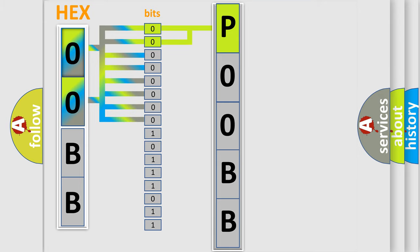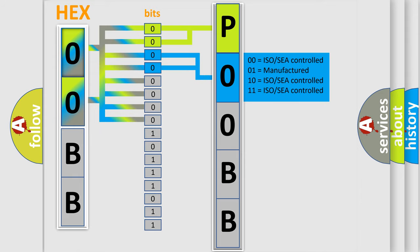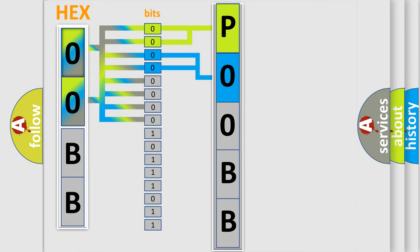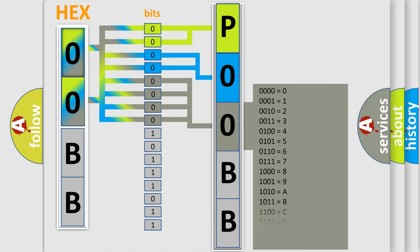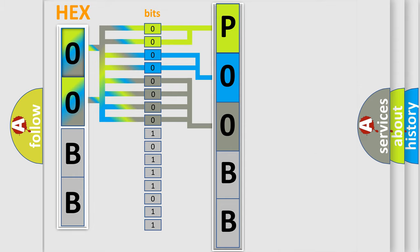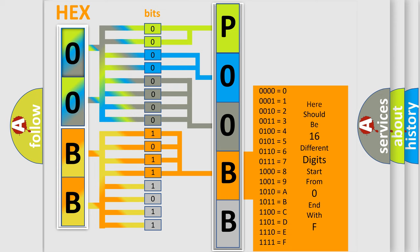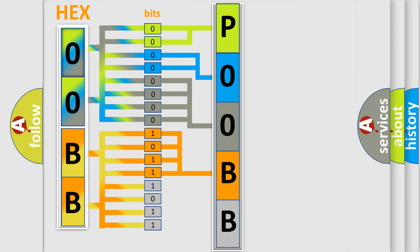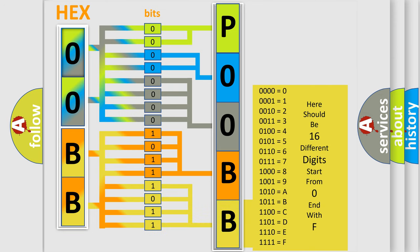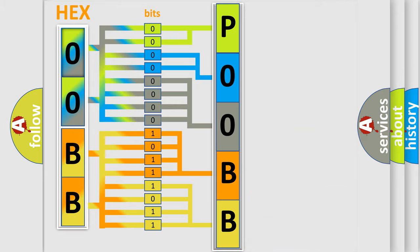The next two bits determine the second character. The last four bits of the first byte define the third character of the code. The second byte is composed of a combination of eight bits. The first four bits determine the fourth character, and the combination of the last four bits defines the fifth character. A single byte conceals 256 possible combinations.